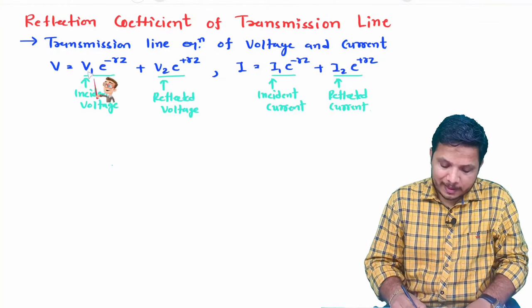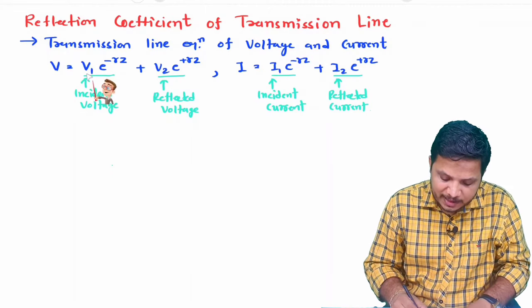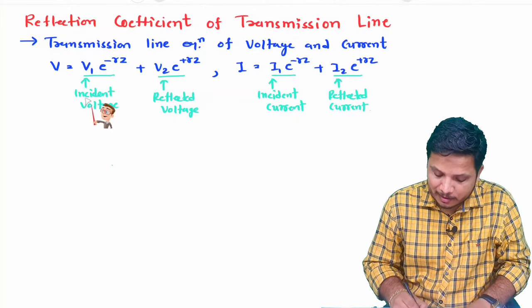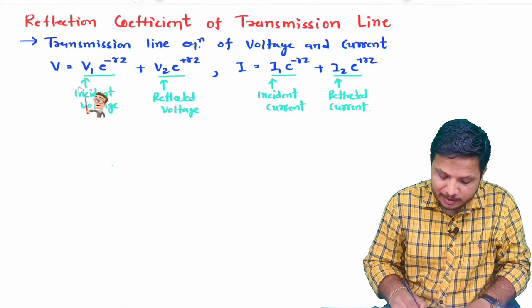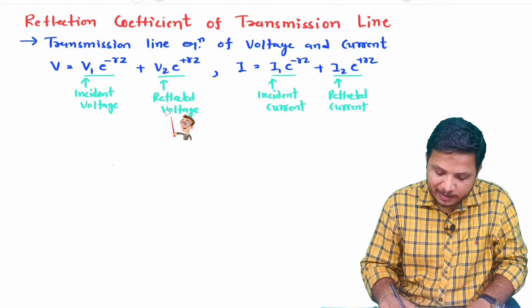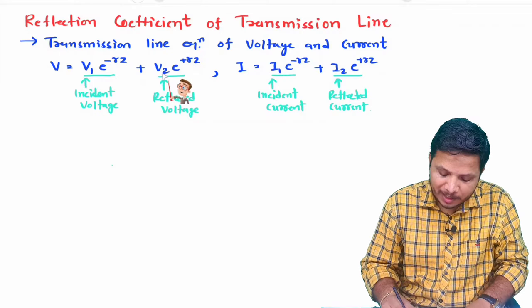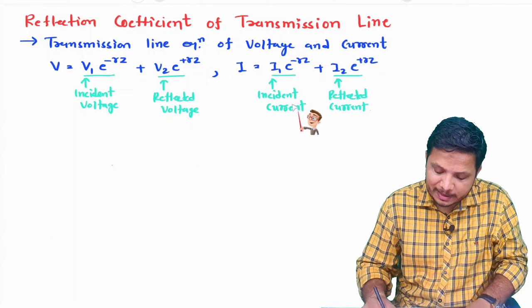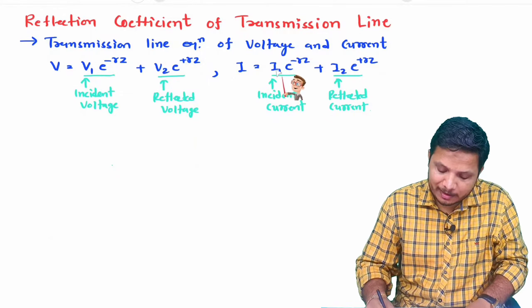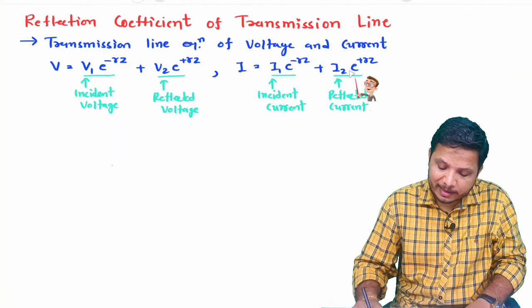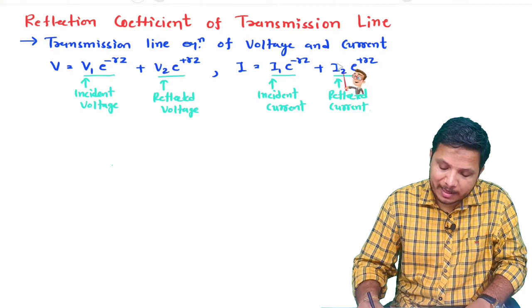Now we will change the notation: V1 corresponds to incident voltage, so we write Vi instead of V1. V2 corresponds to reflected voltage, so we write Vr instead of V2. I1 corresponds to incident current, so we write Ii instead of I1. I2 corresponds to reflected current, so we replace it with Ir.